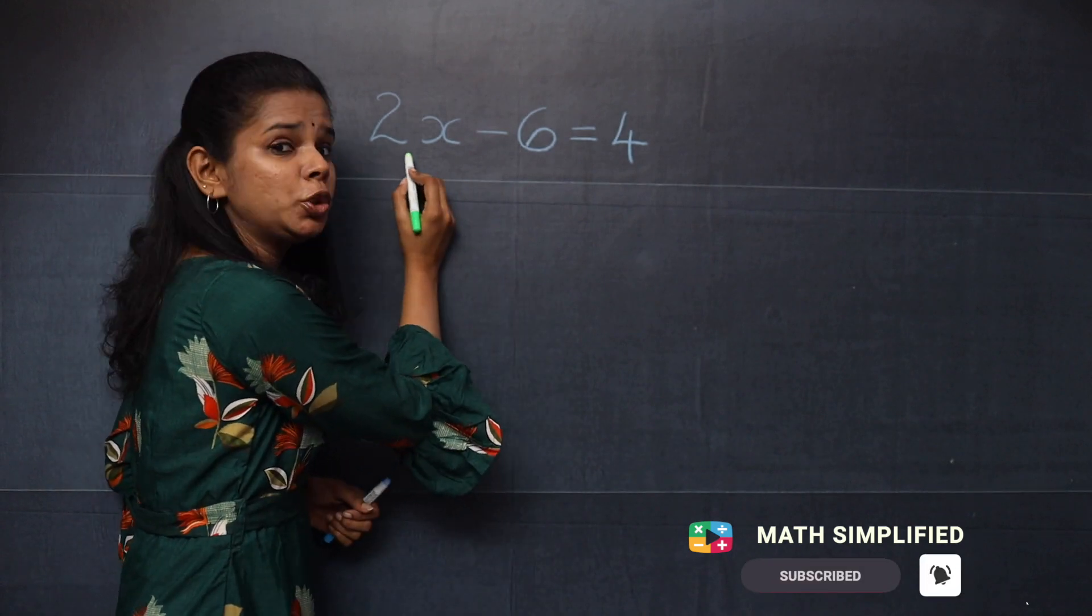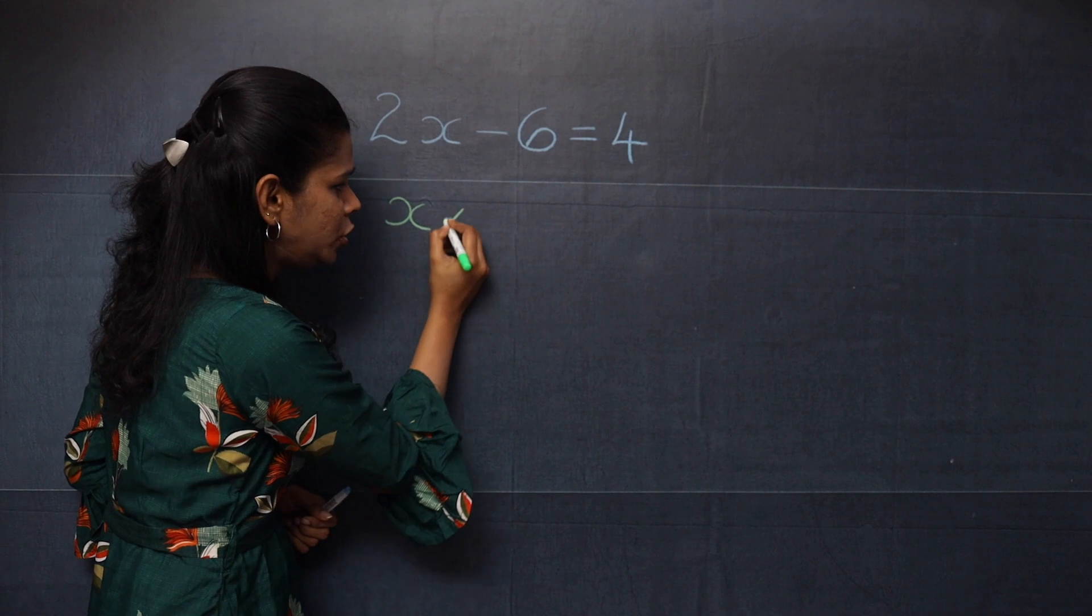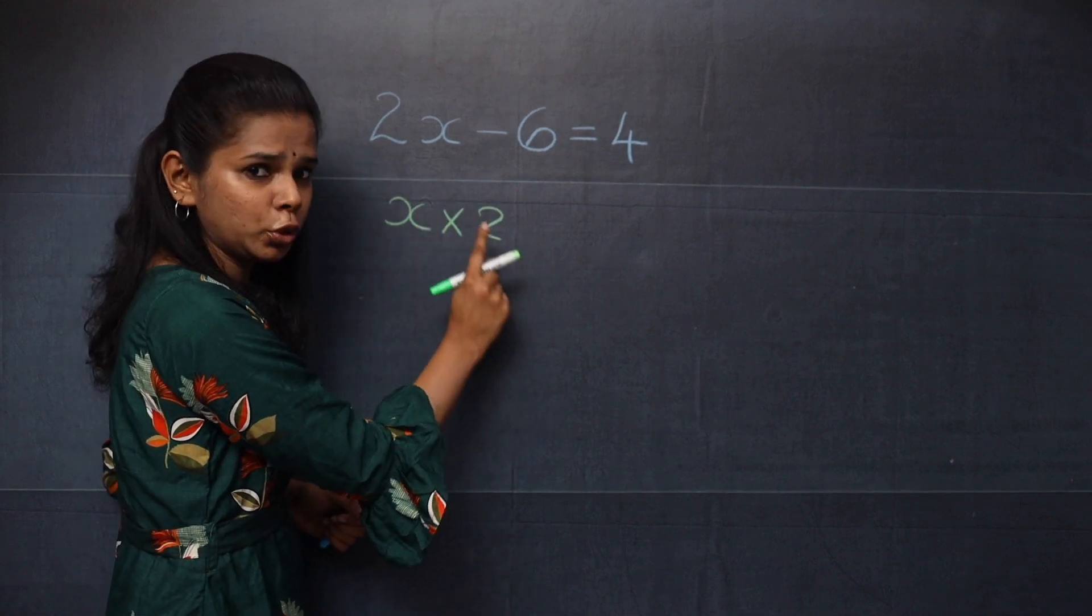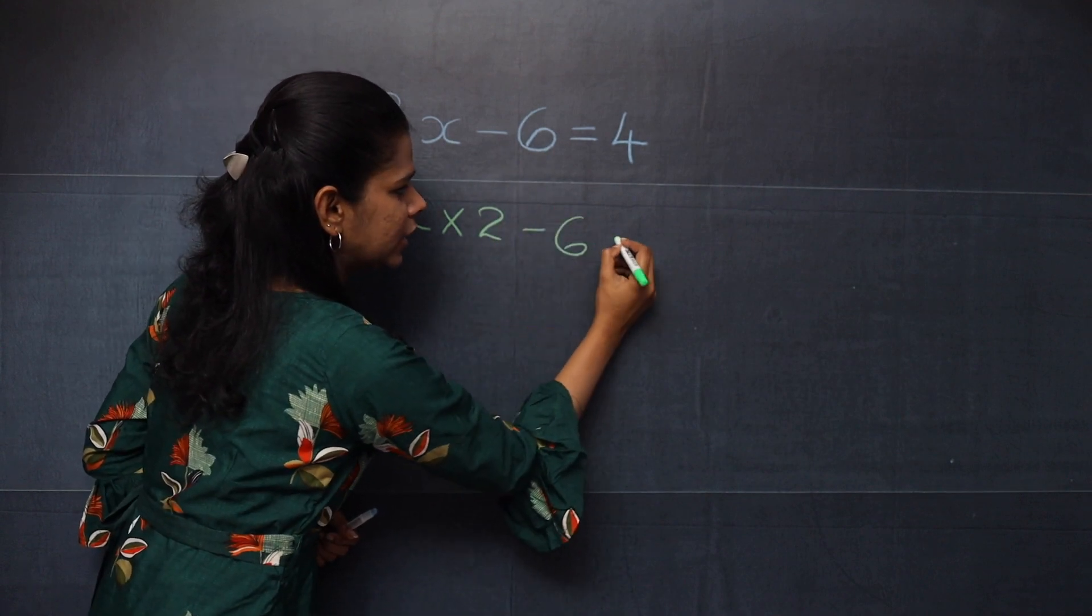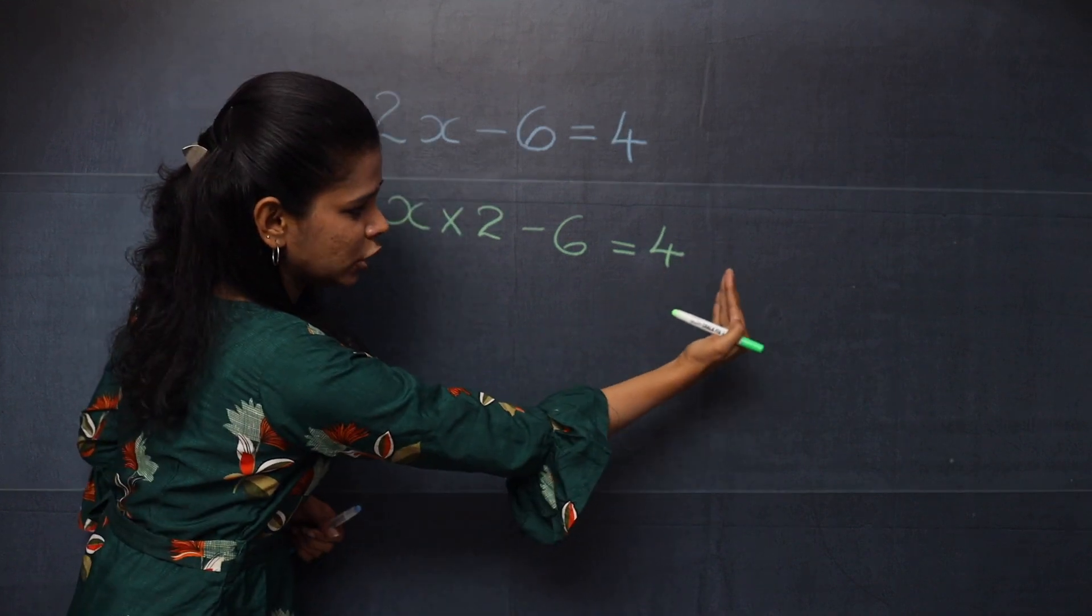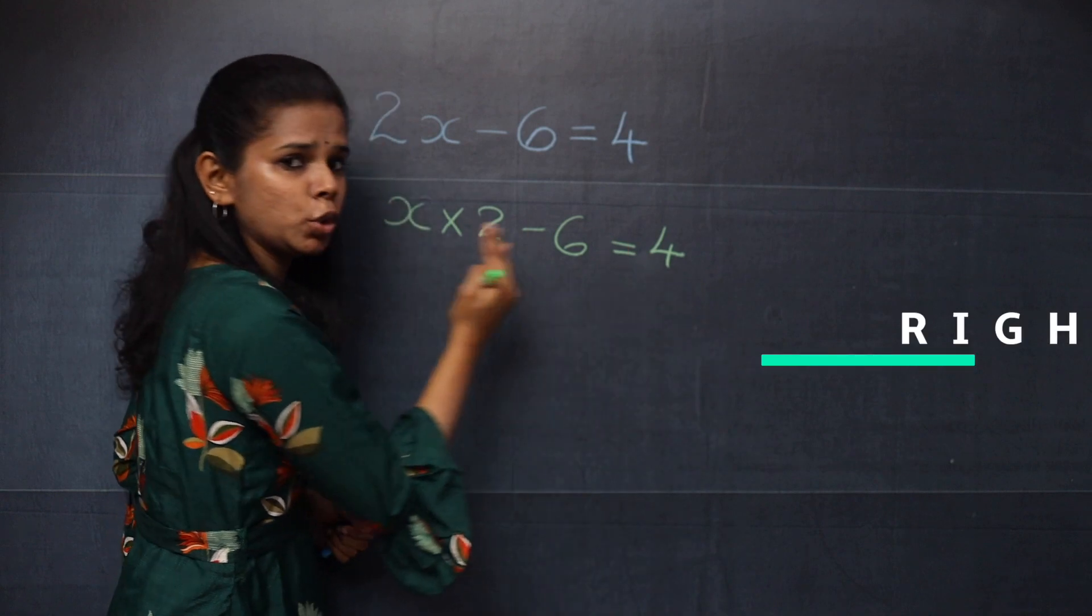First, you will write 2x as x into 2. Don't write 2 into x, you will write x into 2. And then you have minus 6 equal to 4. Now you will check from this side, not the other side, from right to left.